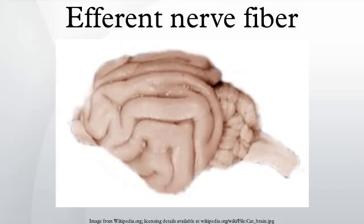In the peripheral nervous system, an efferent nerve fiber is the nerve fiber of an efferent neuron. It is a long process extending far from the nerve cell body that carries nerve impulses away from the central nervous system toward the peripheral effector organs.